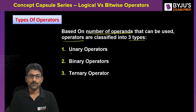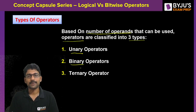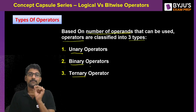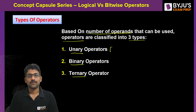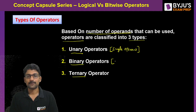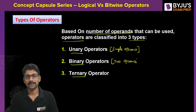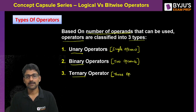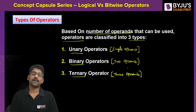The three types are: unary operators, binary operators, and ternary operators. Unary operators use only a single operand. Ternary operators perform operations on three operands — hence the name ternary.